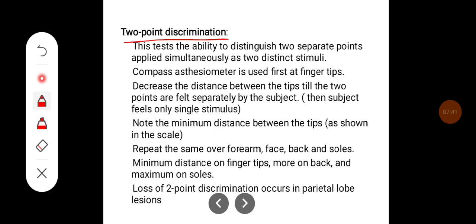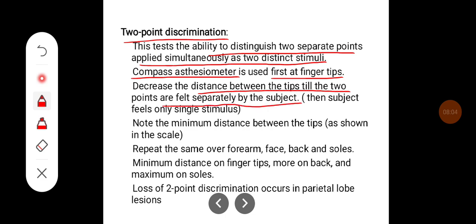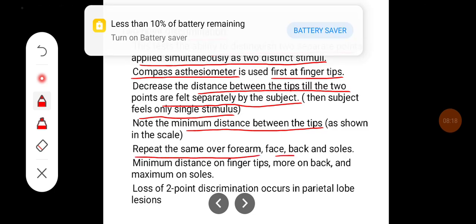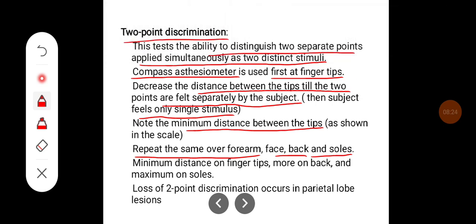Two-point discrimination is the ability to distinguish two separate points applied simultaneously as two distinct stimuli. The compass aesthesiometer is used for this purpose. Start at the fingertips, then decrease the distance between the tips until the two points can no longer be felt separately. Note the minimum distance between the tips and repeat over the forearm, face, back, and soles.